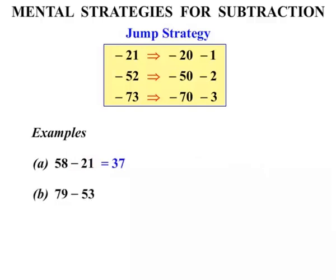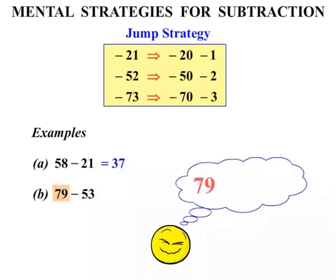79 minus 53. So we're thinking 79 to start with. Now to take away 53, let's do 2 steps. Let's take away 50, then we'll take away 3. So we've got 79 in our mind, we take away 50, we'd be down to 29. And then we still have to take 3 more away, we'd be down to 26.